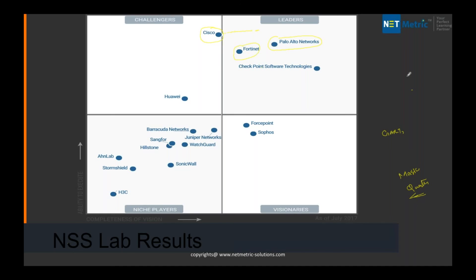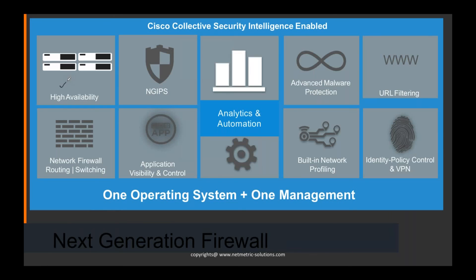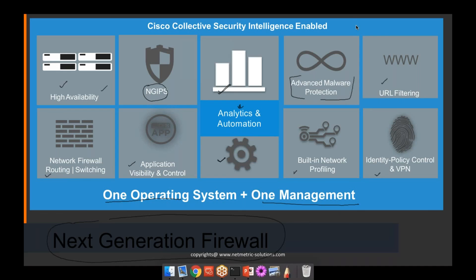So, what is the next-generation firewall? A next-generation firewall is a device which gives you high availability, IPS features, analysis as well as automation with RESTful APIs, AMP — Advanced Malware Protection, URL filtering, identity and policy-based control with VPN, built-in network profiling, application visibility and control, and network firewall routing as well as switching — all under one OS, one management. That is the next-generation firewall. In the next video we're going to start with interfaces, ACL and NAT.